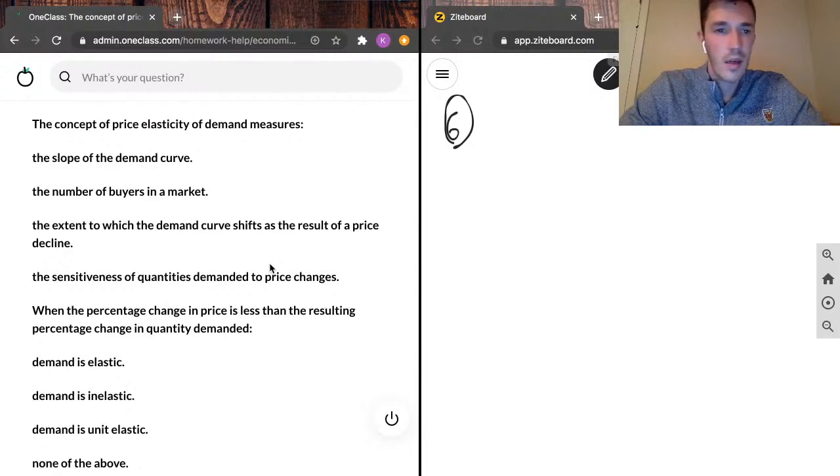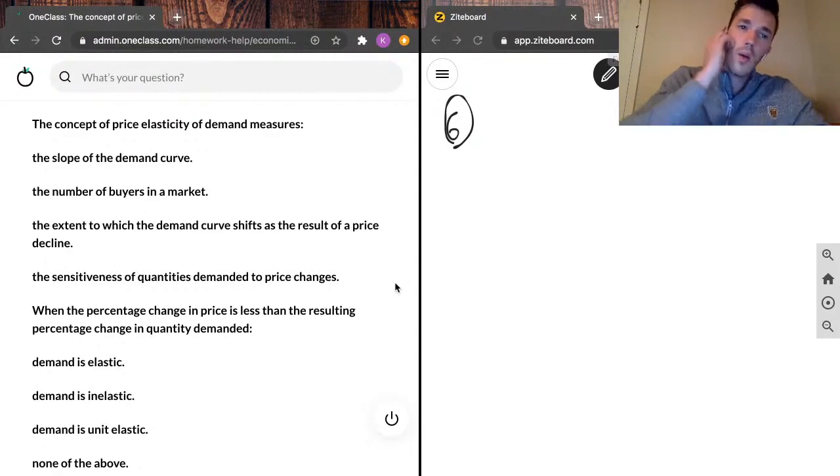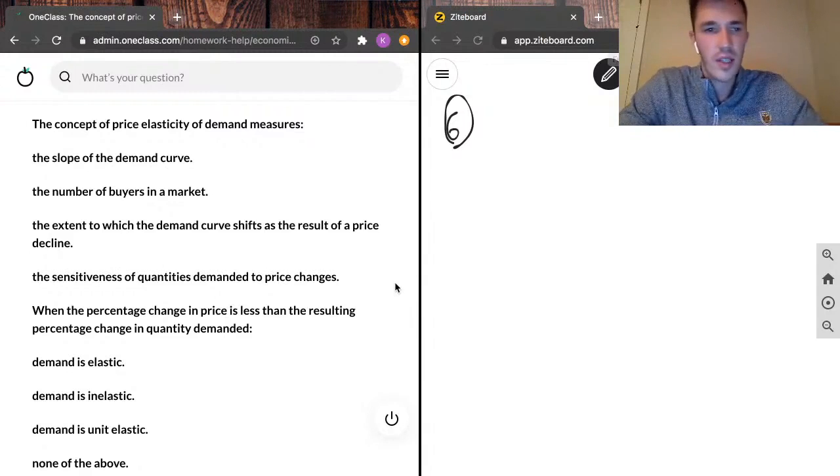One, the slope of the demand curve. Two, the number of buyers in the market. Three, the extent to which the demand curve shifts as a result of a price decline. Or four, the sensitiveness of quantities demanded to price changes.